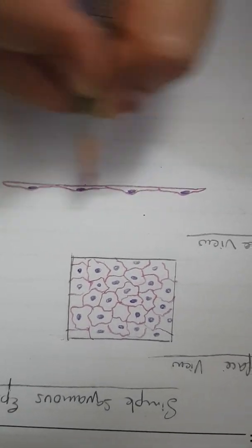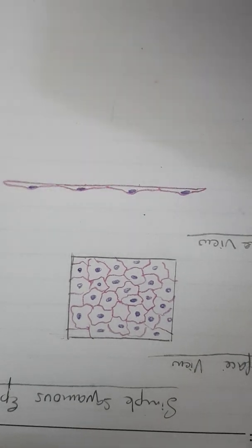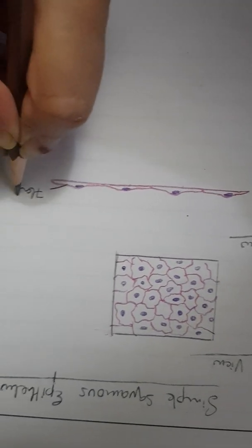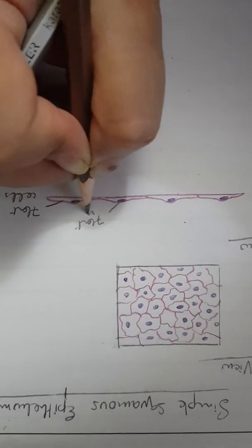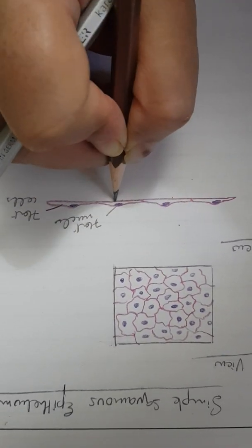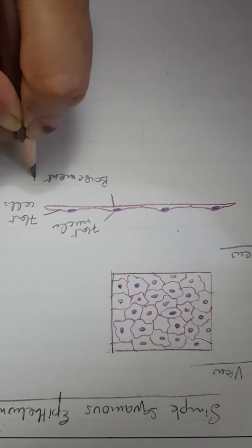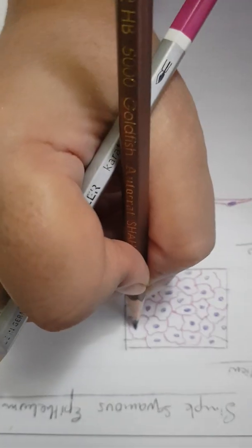You can identify the slide by looking at these flat nuclei. These are the flat cells, these are the flat nuclei, and this is the basement membrane. While in surface view, the basement membrane is not visible.